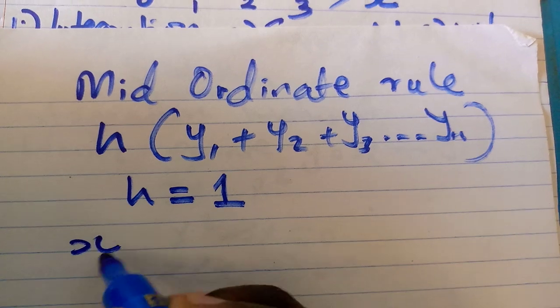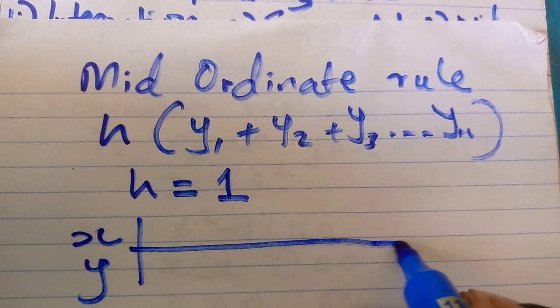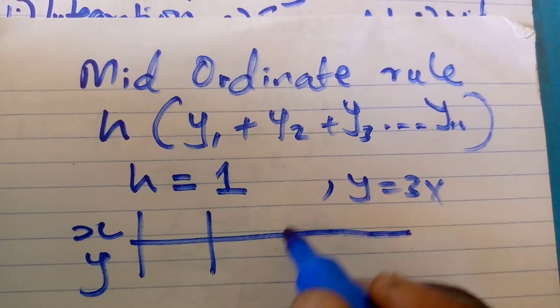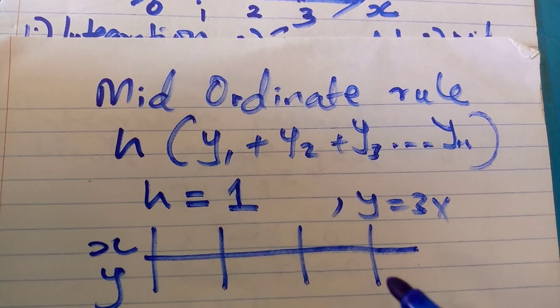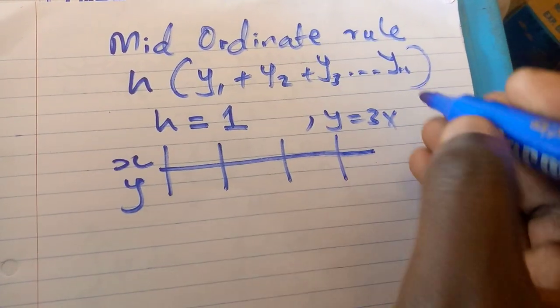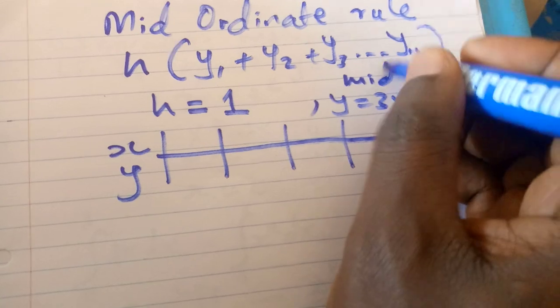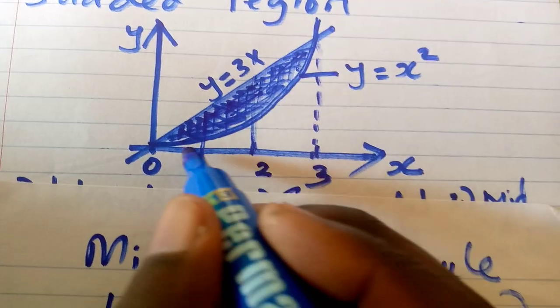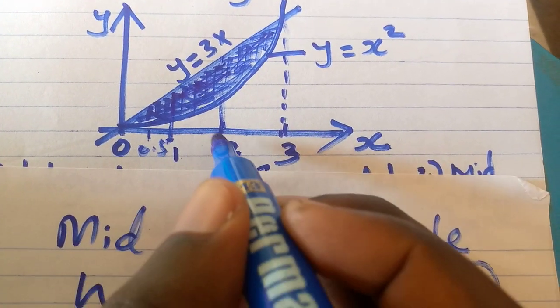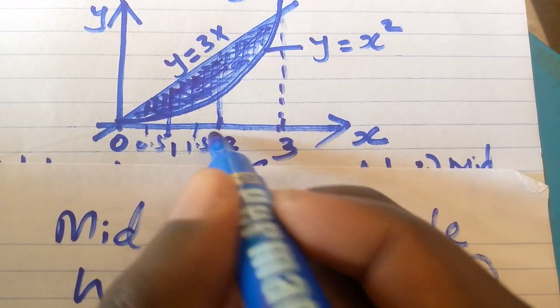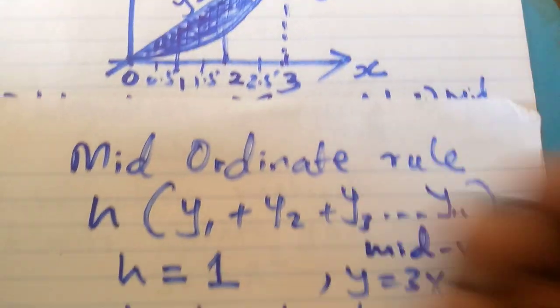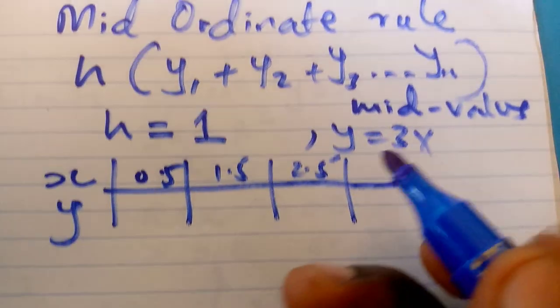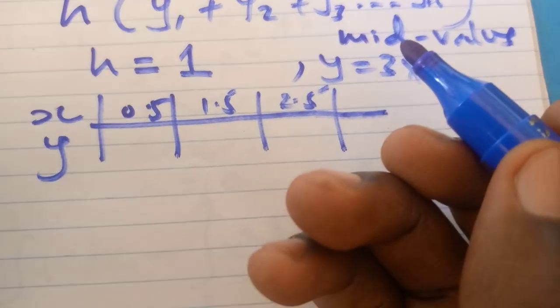So I have x and y. And substituting y equals 3x. And remember, my mid-ordinate uses the mid values. So here I'll use 0.5, 1.5, 2.5.